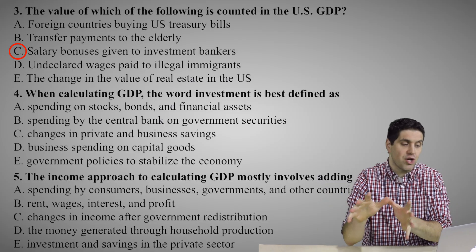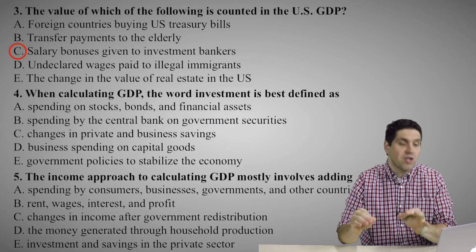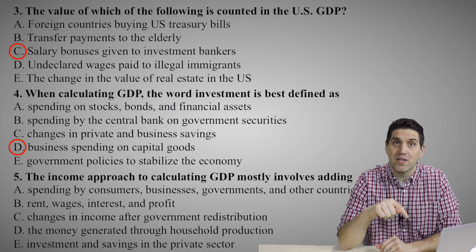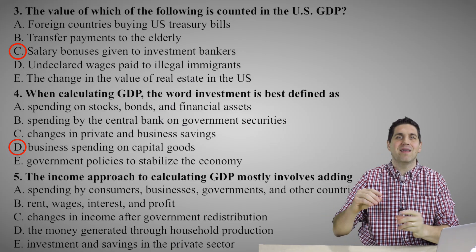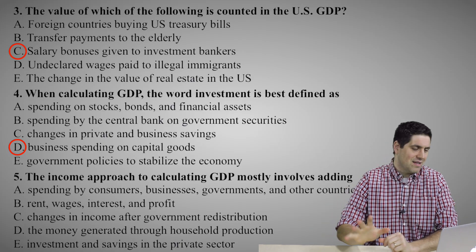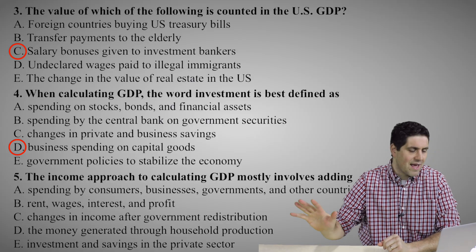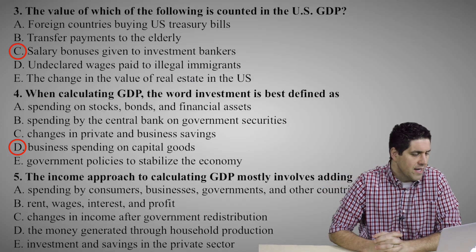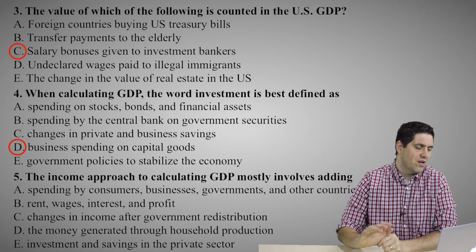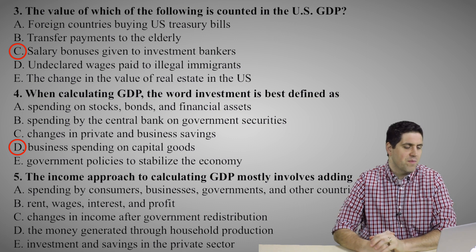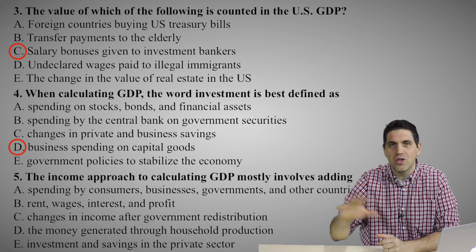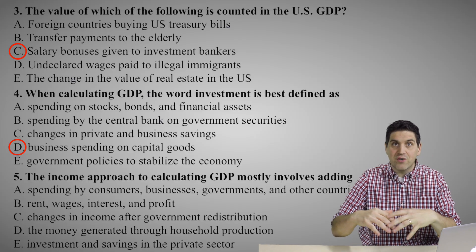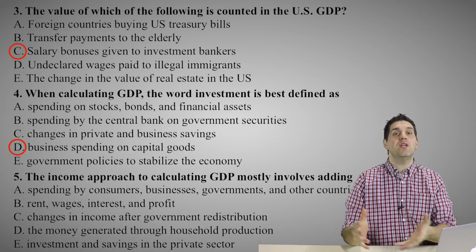For question number four, remember: when we talk about investment in this class, we're always talking about business spending on capital goods. The answer was D. It has nothing to do with stocks and bonds or your parents' retirement account. Spending on stocks and bonds — that's not investment for this class, not for economics. Spending by a central bank on government securities — no. Change in private and business savings — no. Government policy that stabilizes the economy — that's fiscal and monetary policy. Investment is always business spending: buying machines, tools, and factories to improve your business.